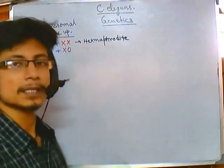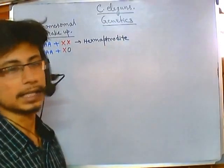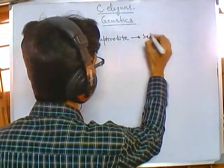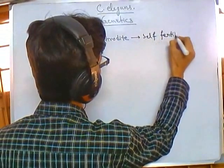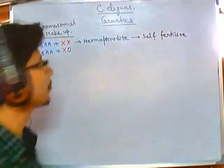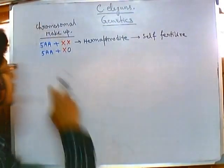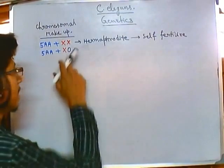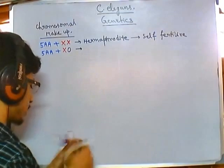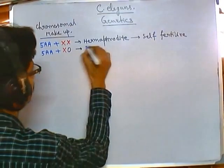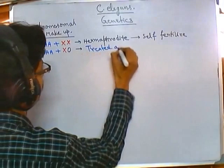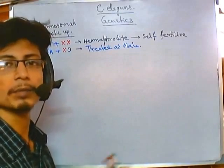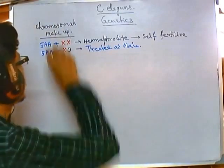Hermaphrodite C. elegans can self-fertilize — they can produce their own sperm as well as their own eggs. Those that have only one X chromosome (X0) cannot self-fertilize. This difference means we can use them in different genetic recombination studies. This is the basic makeup of their chromosomes.